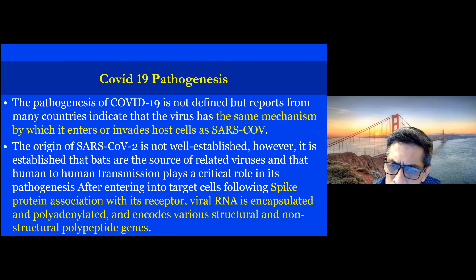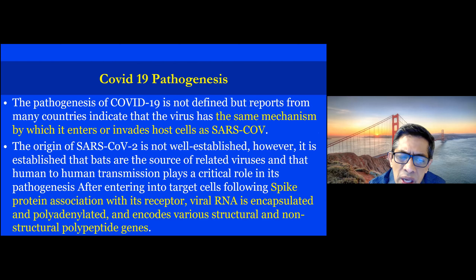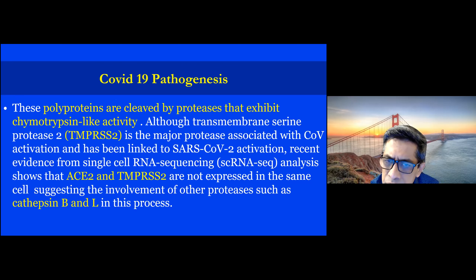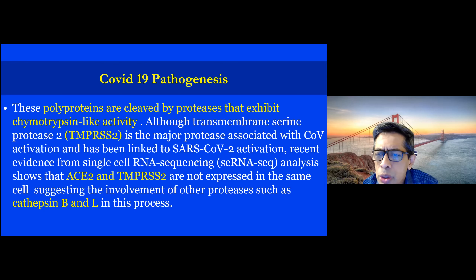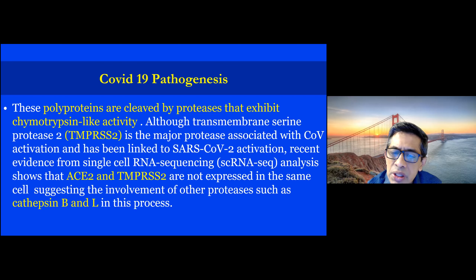The spike protein is associated with the receptor, and the viral RNA is encapsulated, polyadenylated, and encodes various structural and non-structural polypeptide genes. These proteins are cleaved by proteases with chymotrypsin-like activity. TMPRSS2, the transmembrane serine protease, is a major protease contributing to COVID activation and linked to SARS-CoV-2 activation. Current evidence from single-cell RNA sequencing analysis shows that ACE2 and TMPRSS2 are not expressed in the same cell, suggesting the involvement of other proteases like cathepsin B and L.